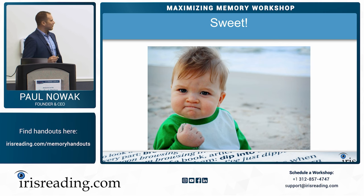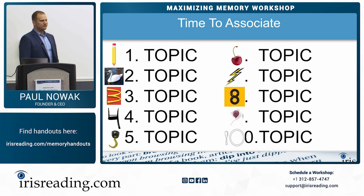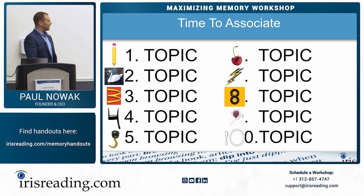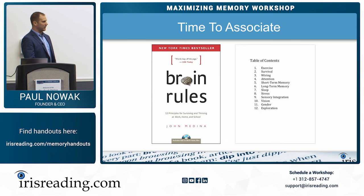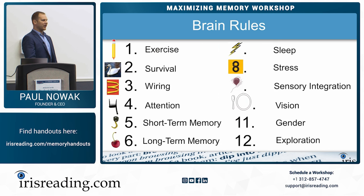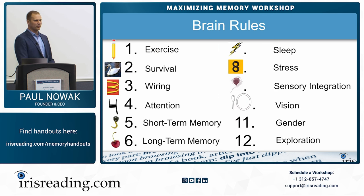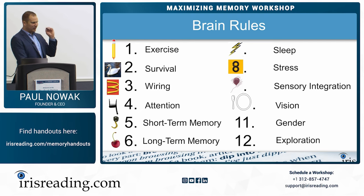Now we've got to associate. We put the numbers and topics side by side and associate each brain rule to its peg. In this case, we've got to associate exercise to a pencil, survival to a swan, and so forth. We need to make sure these things are visualized in our heads.